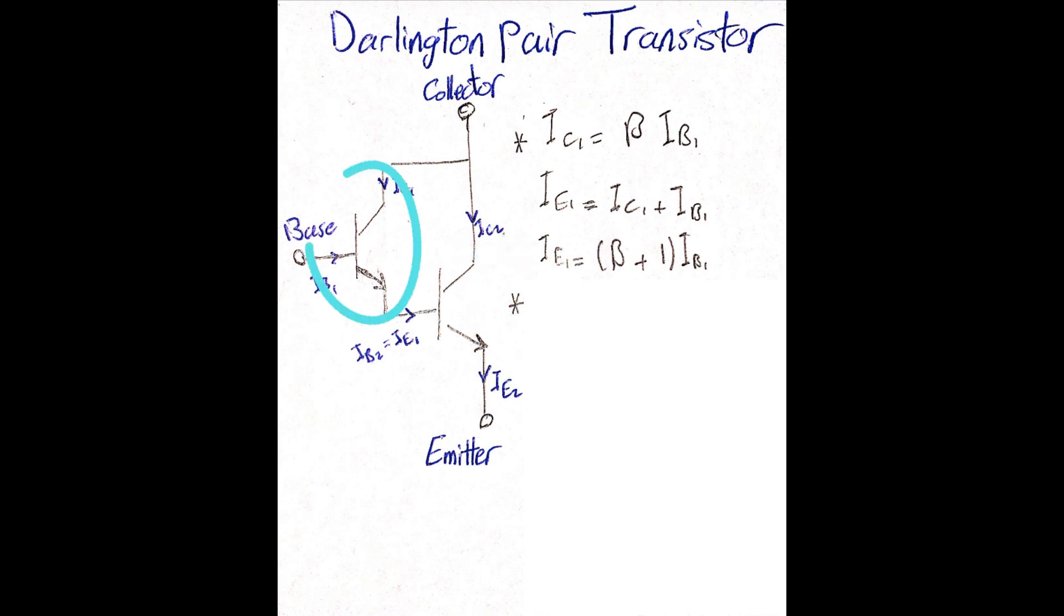By focusing on the first transistor, these are the equations that we can derive. And if you notice, the emitter current of the first transistor is the base current of the second transistor, which is gonna help us to find the current parameters of the second transistor.